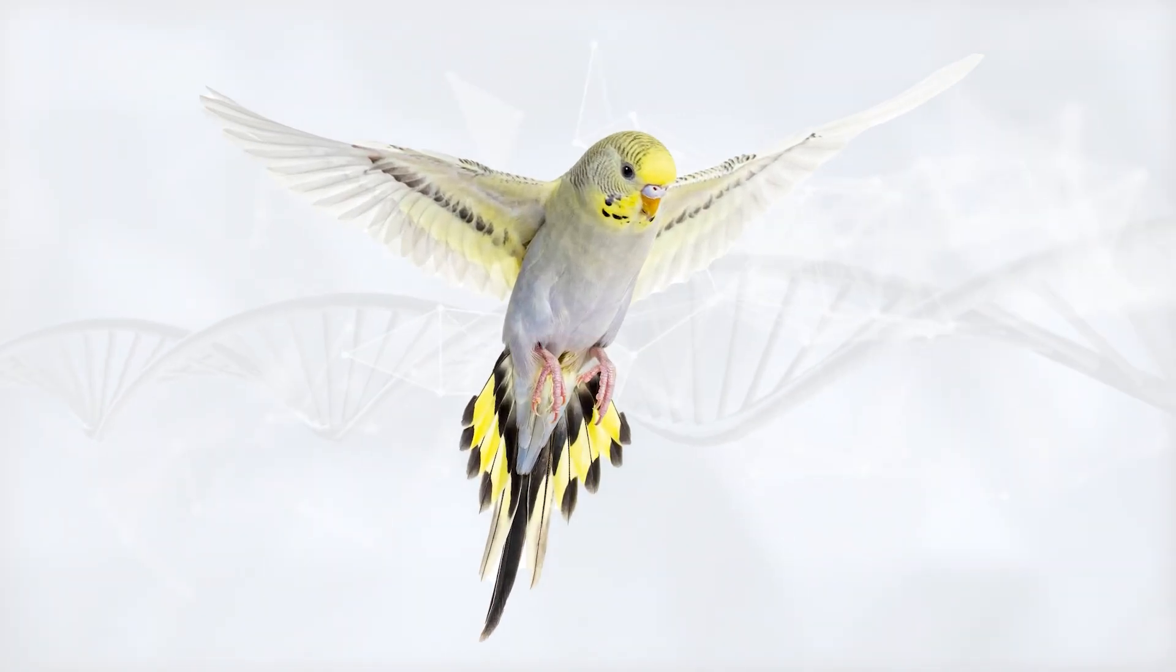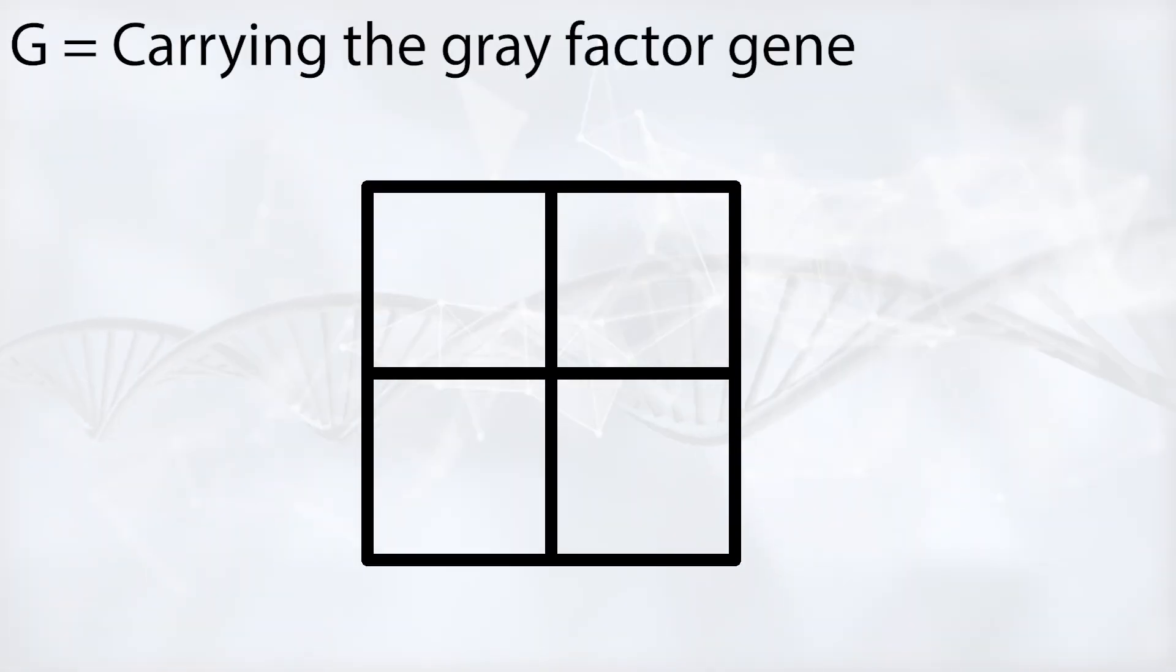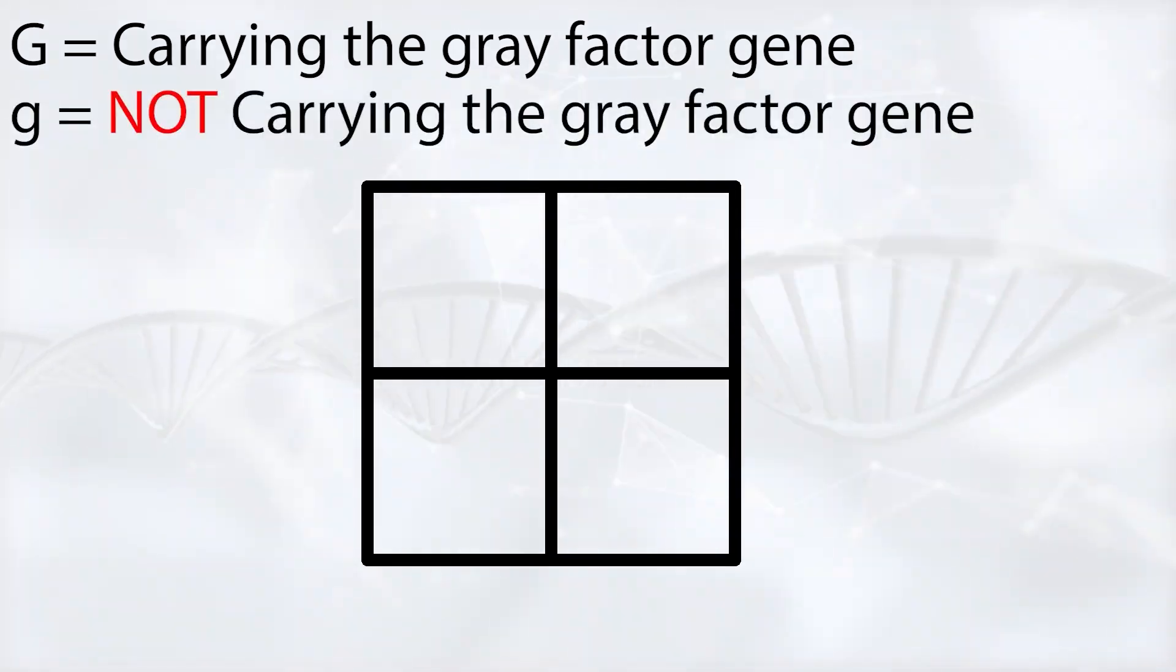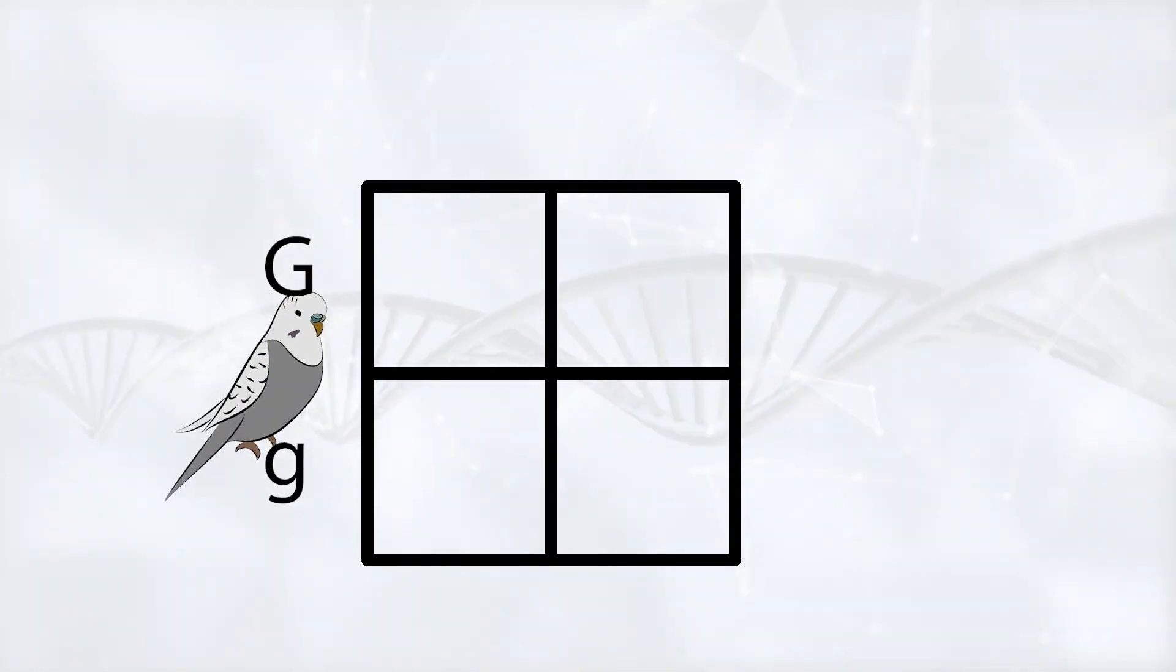Unlike the gray gene for example, where one copy is enough for the gray to fully express itself in the bird. Because as we discussed in the gray gene video, it's a dominant gene. I'll keep a link in the description for that video if you missed it.